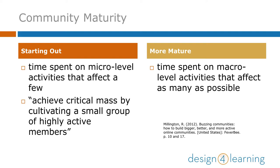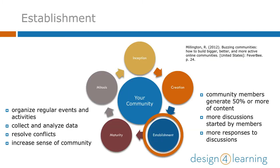Hopefully then you'll reach a point where they're responding a lot more to each other so you don't have to, and instead you can spend your time working more on prompts for the whole group to get even more people engaged. Millington defines the establishment stage as the point when critical mass has been reached, with 50% or more of activity generated by community members rather than community managers, including more discussions started by members and more responses to discussions. Here's a list of the tasks Millington recommends at this stage.